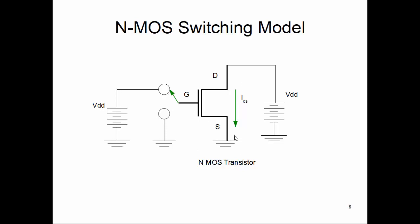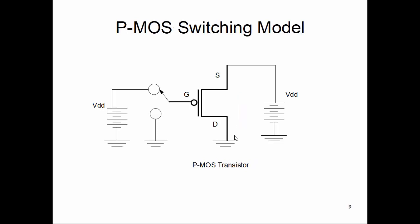When the NMOS transistor is on there is current; when off, there is no current. PMOS works similarly but with the opposite gate convention. When the gate is at logical one, no current is established between source and drain. As soon as we flip the switch to ground — logical zero — current is established between source and drain of the PMOS. By flipping the switch you can turn the current on or off. That's the switching model, and that's all we need to know in this class. We won't be going into electrical characteristics, current waveforms, or power characteristics.